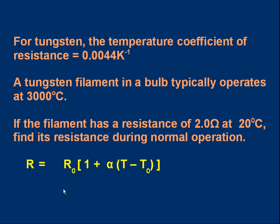Take a look at that. Okay. Here's one for you to try. If you want to pause the video, get pen, paper, and calculator, there's a realistic problem to try out. Let's read through it. For tungsten, the temperature coefficient of resistance, alpha, is 0.0044 Kelvin to the minus 1. A tungsten filament in the bulb, that's the old fashioned bulb, not one of the high efficiency ones. A tungsten filament in the bulb typically operates at 3000 degrees centigrade. If the filament has a resistance of 2.0 ohms at room temperature, 20 degrees C, can you find its resistance during normal operation? So what's its resistance when it's at 3000 degrees C? There's a reminder of the formula you need. If you want to pause the video, you can do that for yourself.